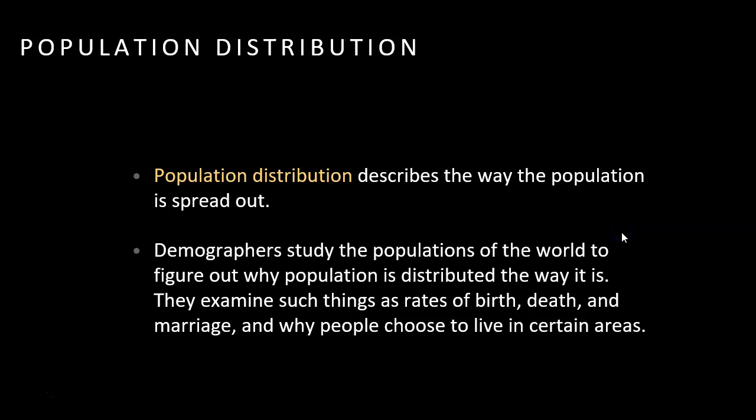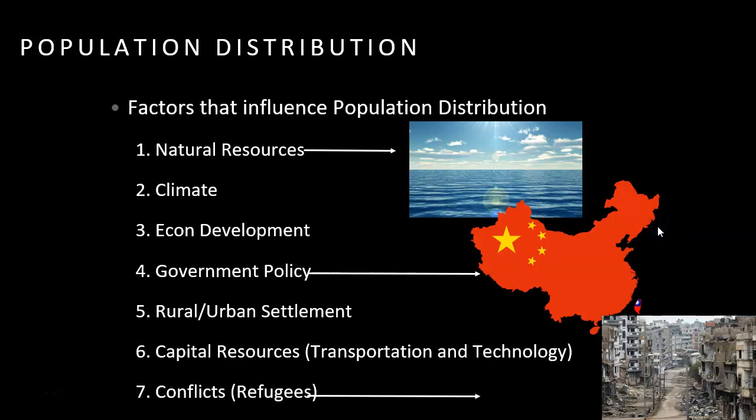Population distribution describes the way population is spread out. Demographers study populations of the world, trying to figure out why population is distributed the way it is. They look at things like birth rates and death rates, and examine reasons why people decide to live in certain areas — things that can influence population distribution.